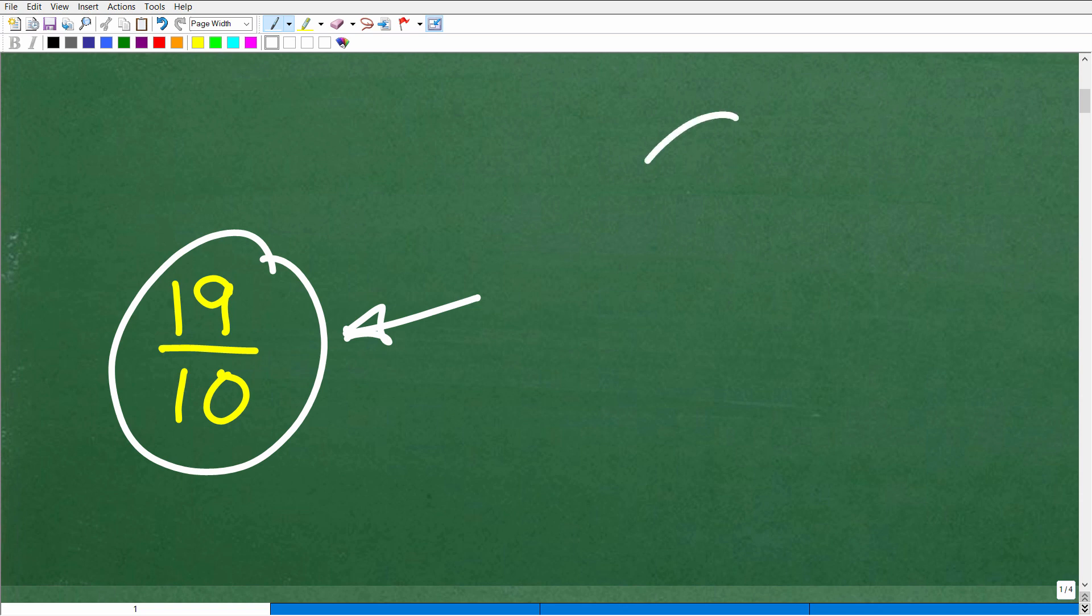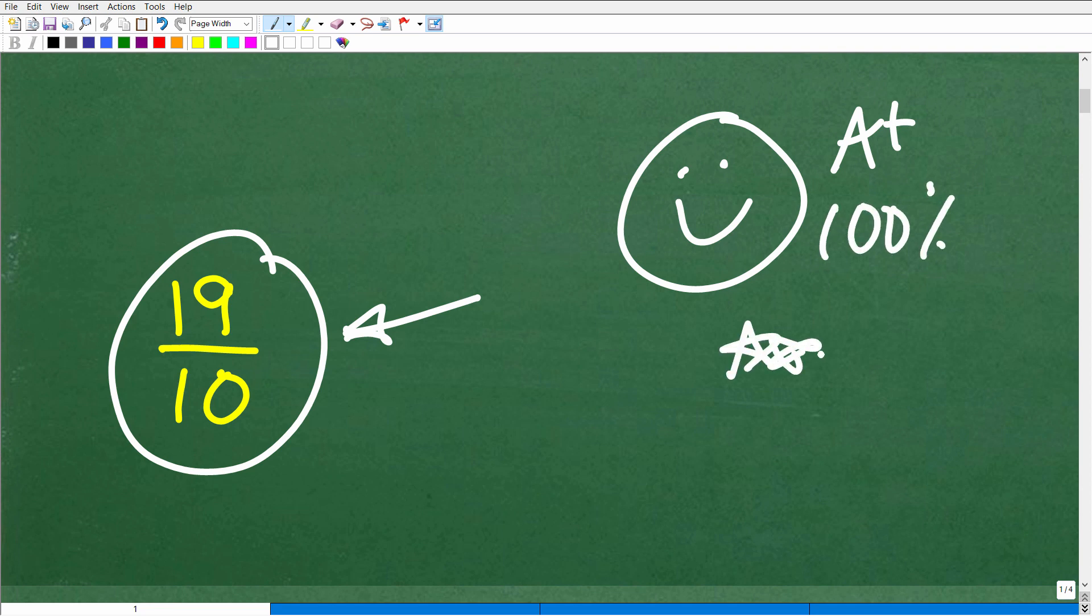But if you got this right, let's go ahead and give you a nice little happy face. And a few stars, you can tell your friends and family that you were able to conquer a seventh grade math arithmetic problem. They'll be like, wow, that is very impressive. Okay, so let's go ahead and get into what we need to do.